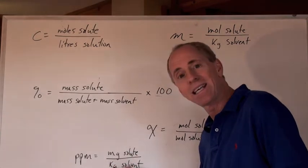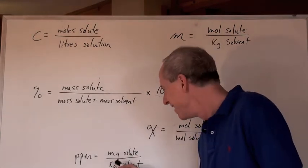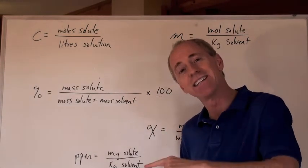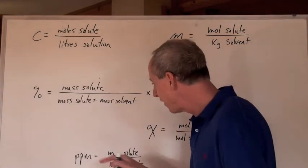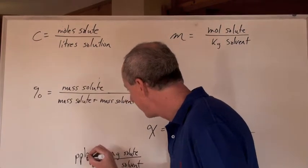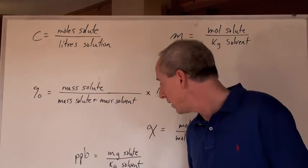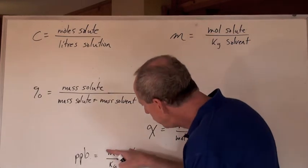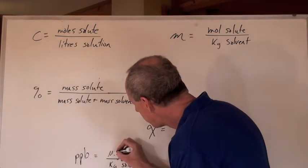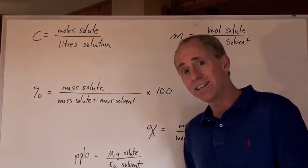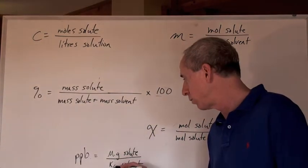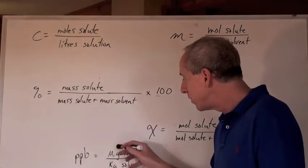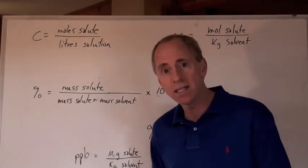Milli is 10 to the negative 3, and kilogram is 10 to the 3, so the difference is 10 to the 6. For parts per billion, that's a 10 to the 9 difference, or micrograms, which is 10 to the negative 6 grams of solute, divided by kilograms of solvent. The difference is 10 to the 9.